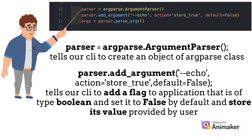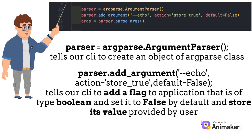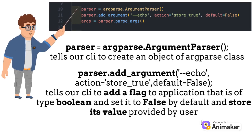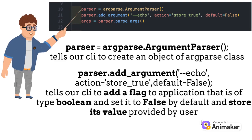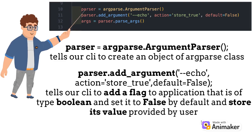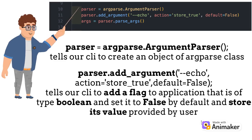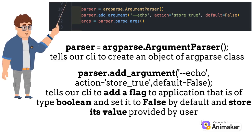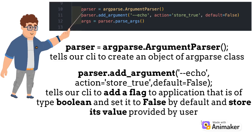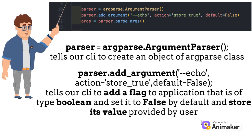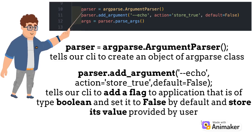Set parser equal to argparse.ArgumentParser, which tells the command line application to create an object of the argparse class. This object allows us to access methods of the class. The add_argument method creates our command line flag, which will be used by users to print a message.